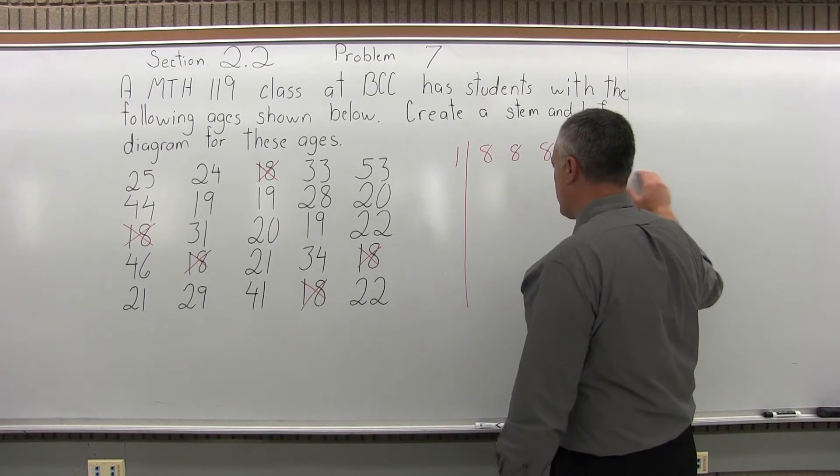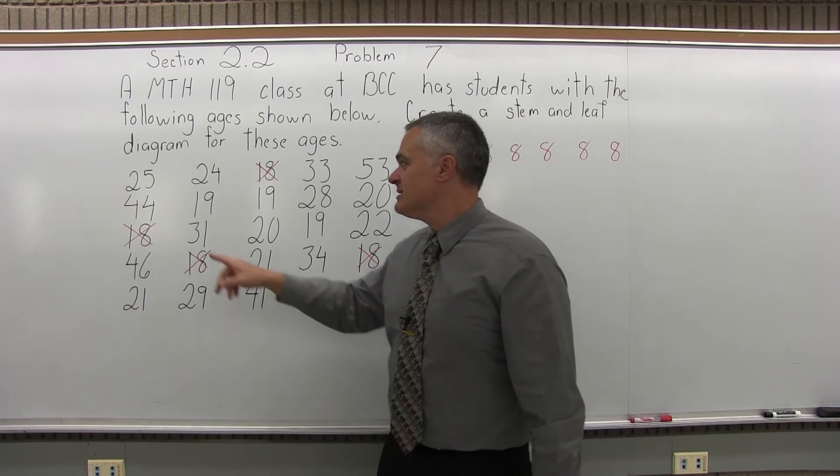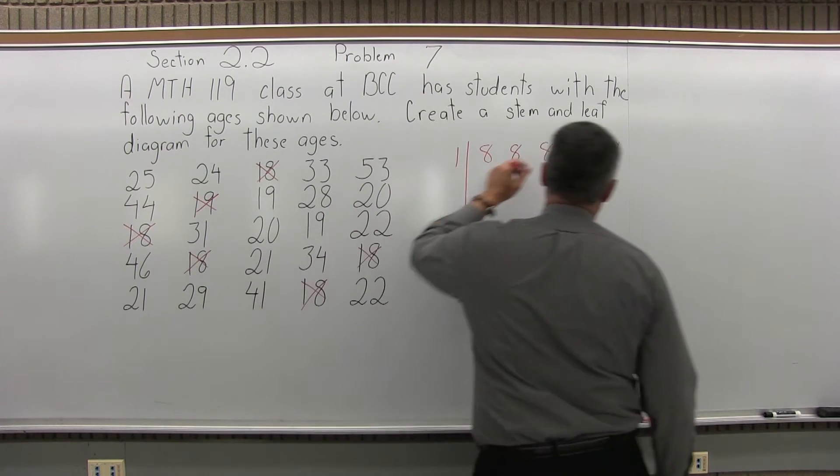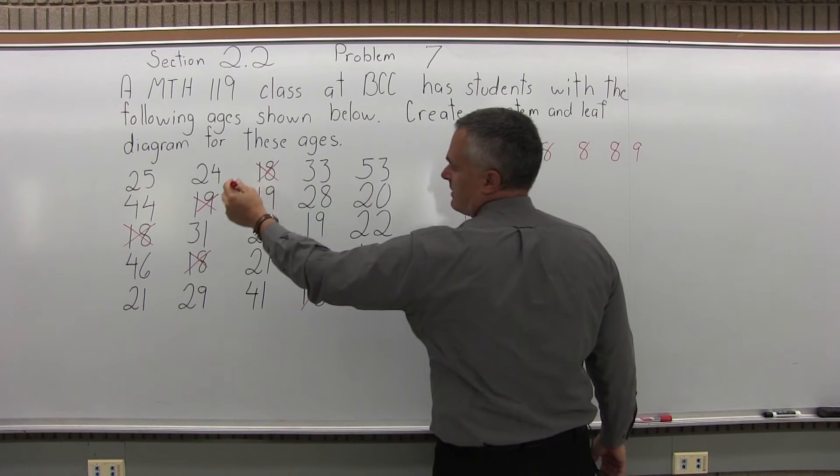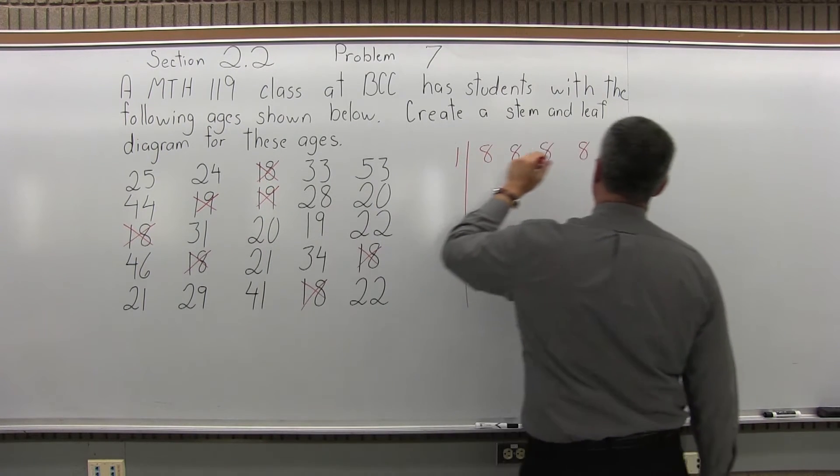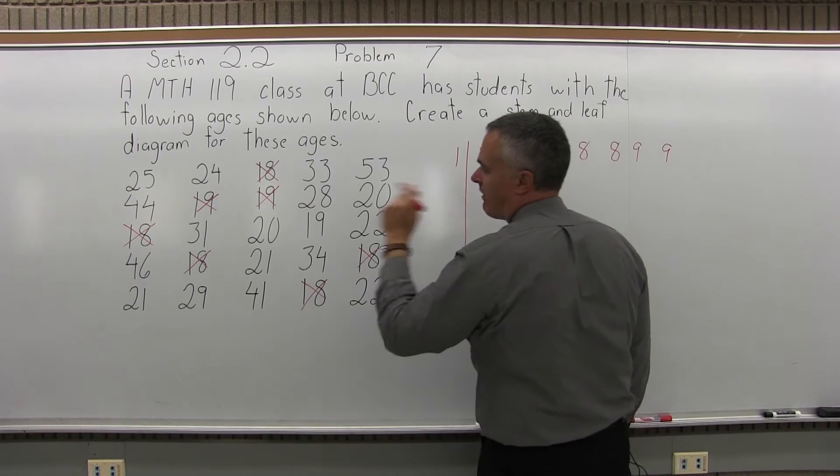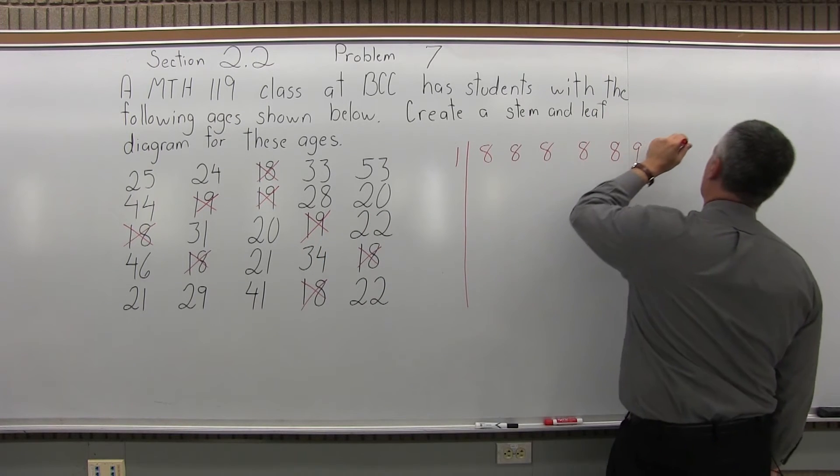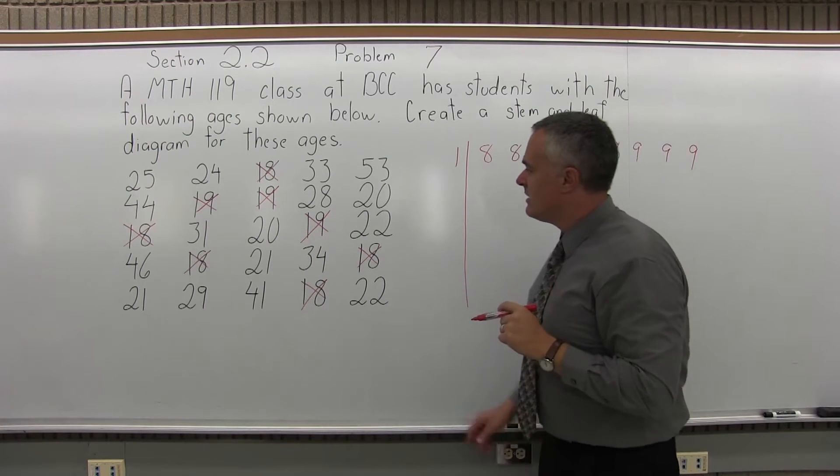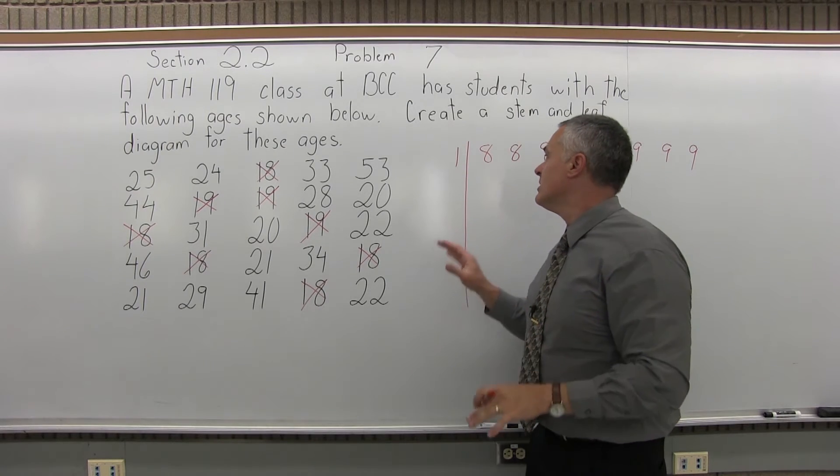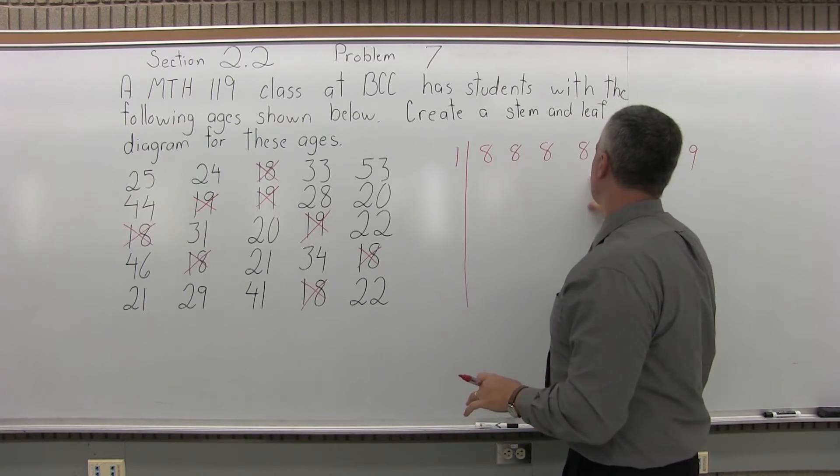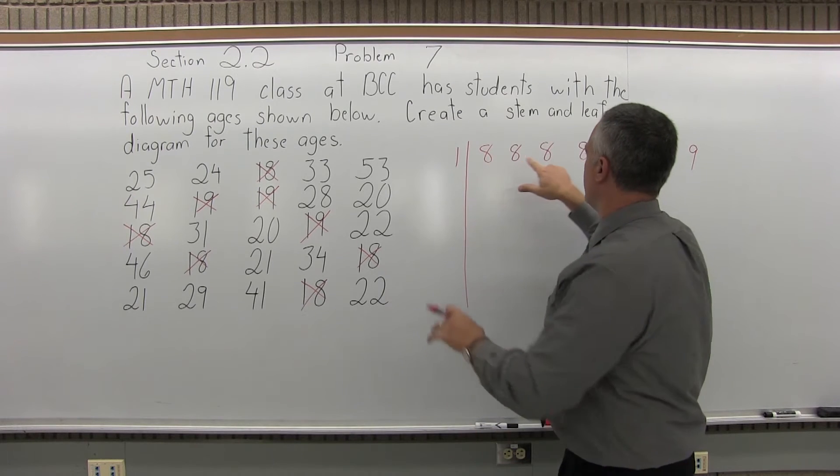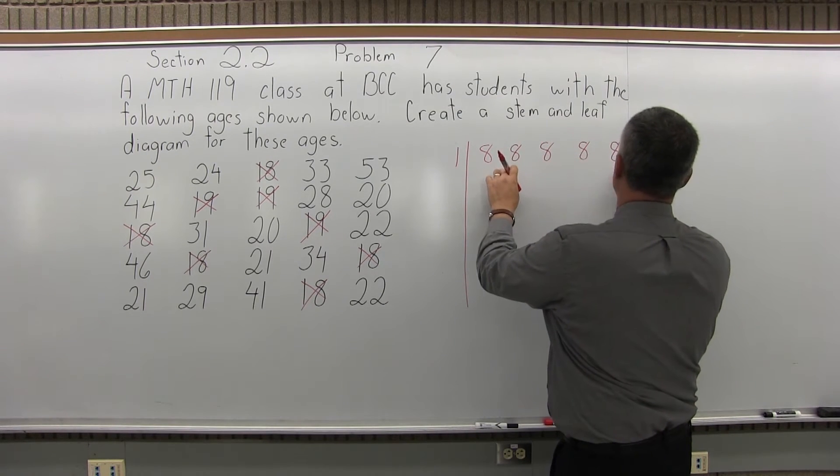So now the next ones in that top row are going to be the 19s. Here's a student who's 19, so that's going to give me a 9. Here's another student who's 19, another 9. Here's one that's 19, one more 9. That looks like all the students that are under 20, that would have a teenage age. So the 1 is the first digit, these are the second. We have 1, 2, 3, 4, 5 students that are 18, 3 that are 19.